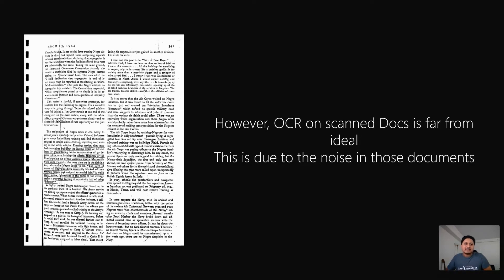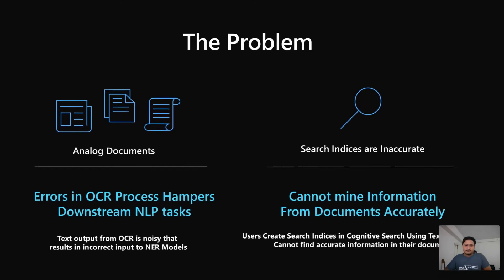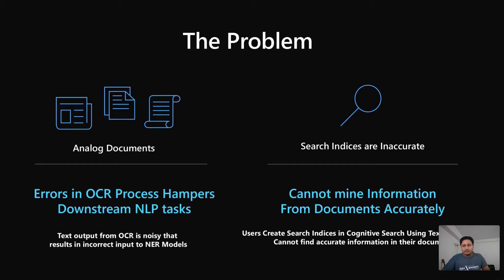On the screen is an example of such a noisy document. Whenever you try to use OCR text from such documents for downstream NLP processing, the results are far from good. We explored the NLP task of entity recognition that enables searching on scanned documents. OCR errors hamper the quality of entity recognition, and the performance drop is pretty bad. This resulted in inaccuracy in the information that was mined from documents, and the search wasn't accurate.